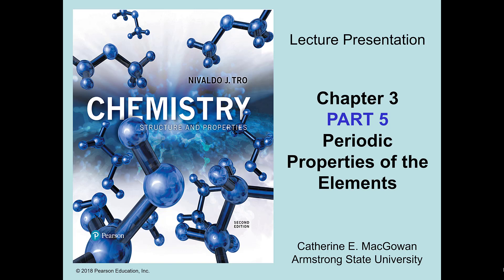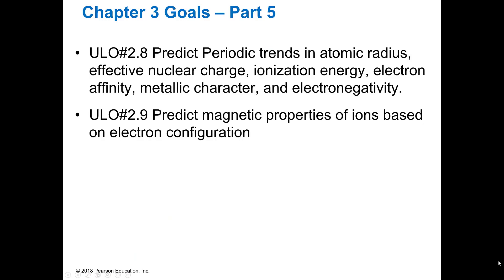Welcome to the fifth part of the periodic properties of the elements discussion. In this discussion we're going to look at some of those trends, specifically atomic radius, ionization energies, electron affinity, and then we're going to look at the magnetic properties of ions based on their configurations.